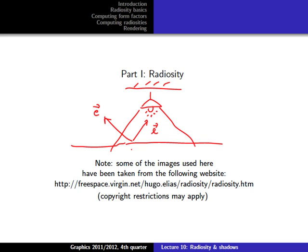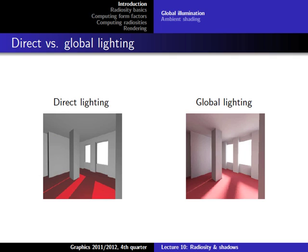Surprisingly, radiosity is not covered in the book, not even in the advanced topics — same goes for shadows. I will provide additional links to further literature on the website. The material I give you in the lectures and tutorials should be sufficient for the exam. For those interested in a deeper understanding, I'll put some references on the website. Let's start with global illumination.